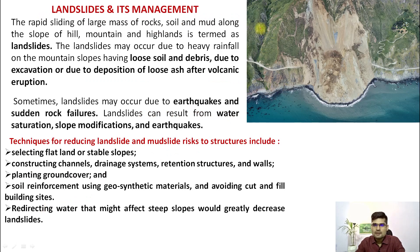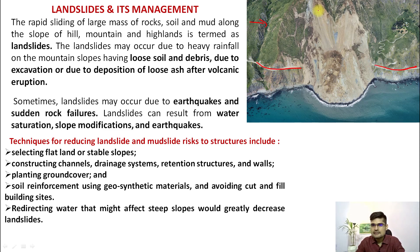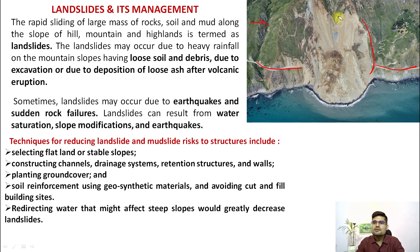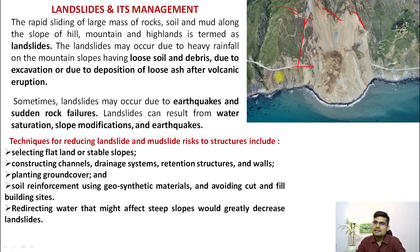Every year in the Himalayan region we find so many cases of landslides. Looking at this particular road going along the slope — this entire slope has completely fallen into the river. This is a classic example of a landslide triggered by road construction, slope angle, removal of trees or vegetation from slopes, or destabilization of slopes.